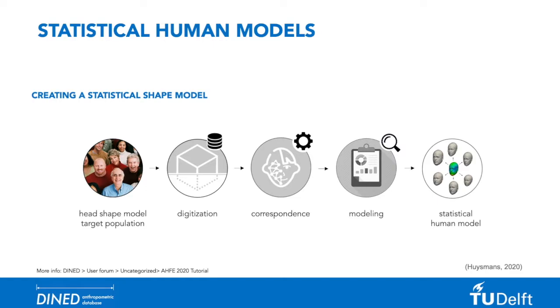This model can be visualized in different ways — for example, using a color map where blue means low variation and green represents high variation, projected on the calculated average shape.